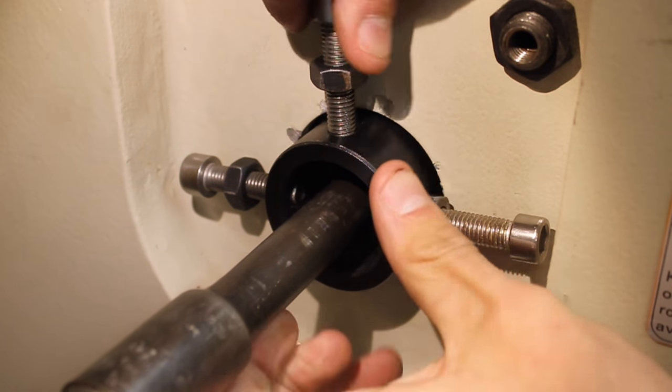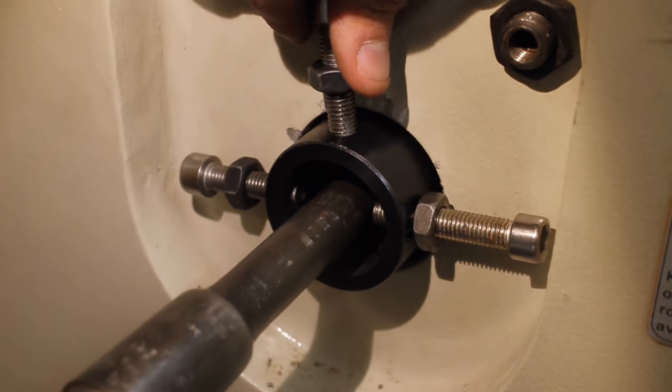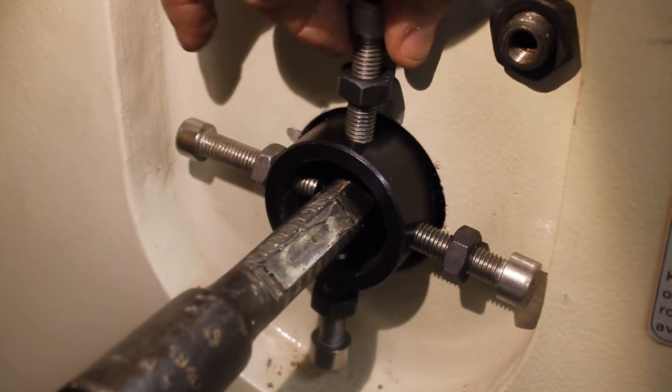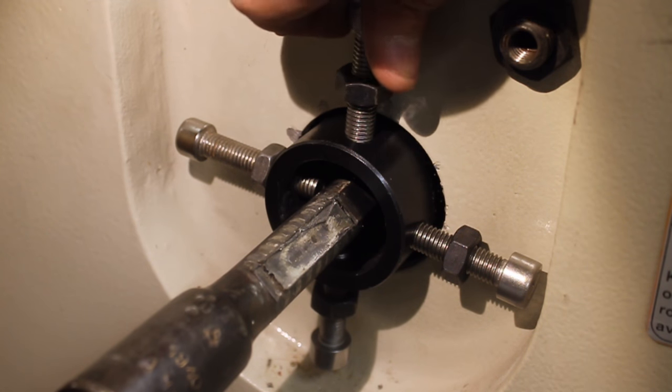Jacking screws are then placed into the spider, which is located on the opposite side of the chuck. This allows the barrel to be zeroed lengthwise, as well as side to side.